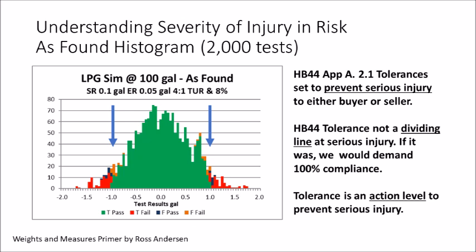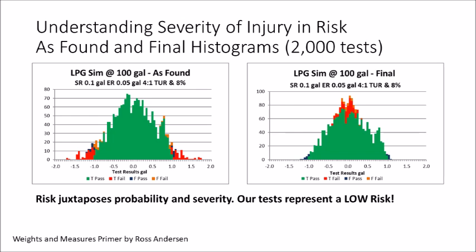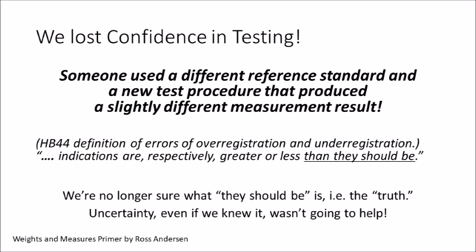In the fundamental considerations, tolerances are set to prevent serious injury to either buyer or seller. But the Handbook 44 tolerance should not be thought of as a dividing line beyond which serious injury occurs — if it were, we would demand 100% compliance, but we don't. Tolerance needs to be thought of as an action level: once you get beyond this point, we force you back to the middle. After inspection, rejected devices are adjusted back to the middle, so the only mistakes left in the marketplace are these little purple tails on either end. Our testing represents low risk — low probability of occurrence and low probability of severe harm.